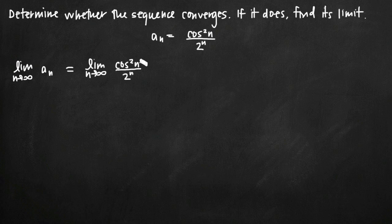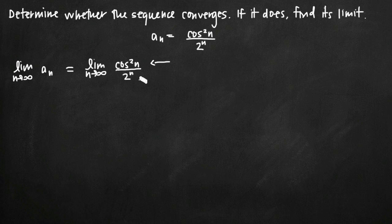The easiest way to find the limit when we have a rational function like this is to deal with the numerator and the denominator separately. Looking at the numerator first — cosine squared of n — we need to think about the cosine function as n goes to infinity. Remember that the cosine function oscillates back and forth between the values negative 1 and positive 1, both from the graph of cosine and from the unit circle. The smallest value cosine ever attains is negative 1, and the largest value is positive 1. So cosine of n is greater than or equal to negative 1 and less than or equal to positive 1.